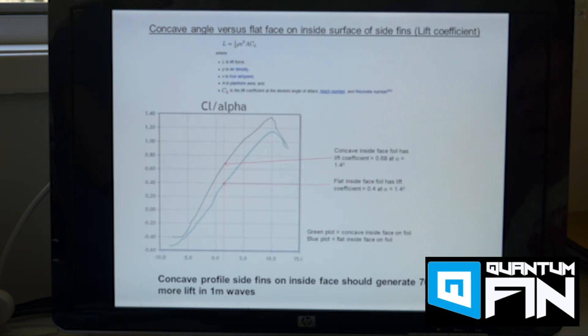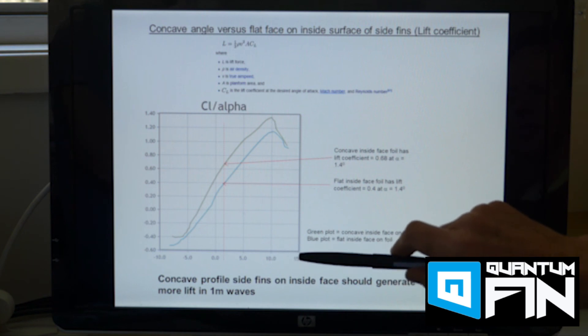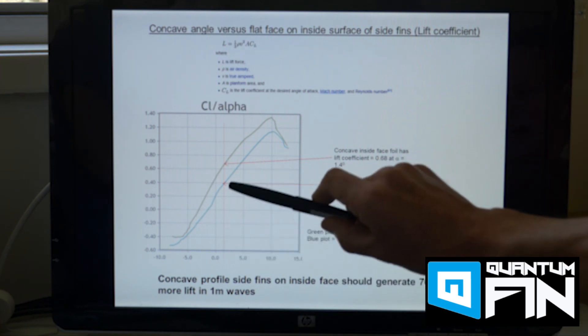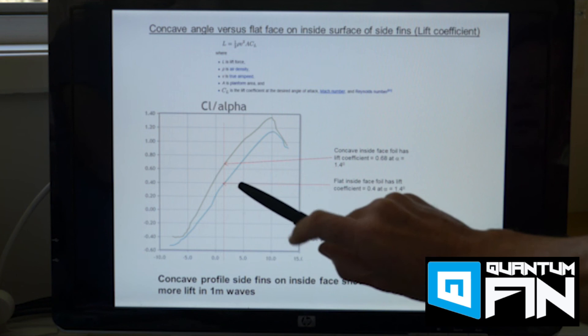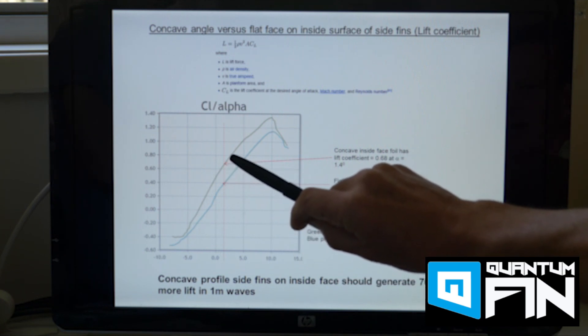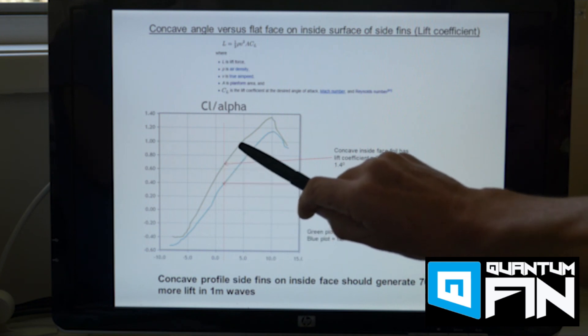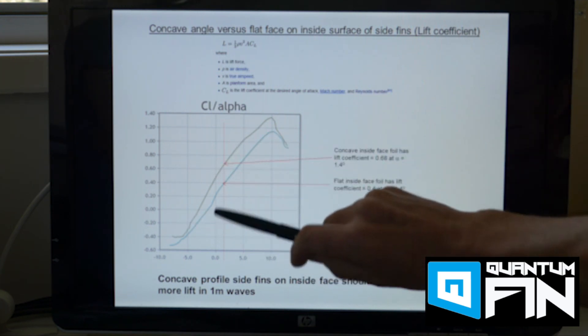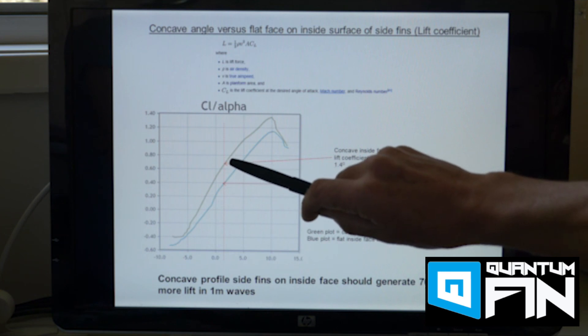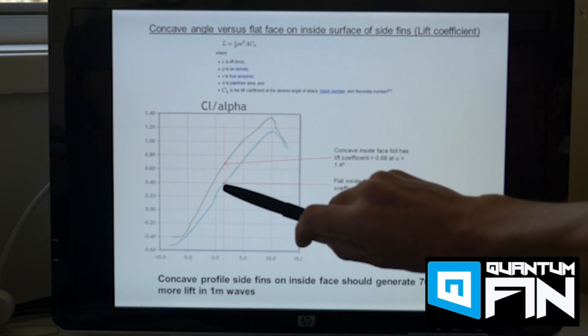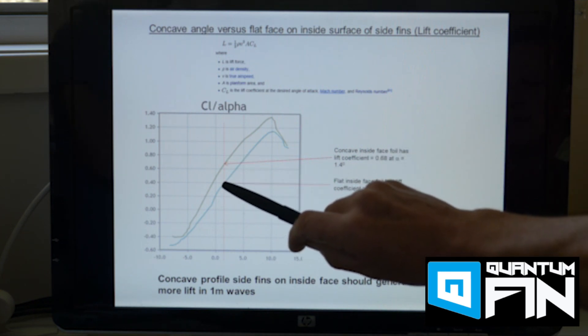So these foil sections are derived from known airfoil sections which have been used in the aeronautical industry for many years and what we're looking at when we compare these two different foil sections is that for a given angle of attack you can see here that the foil section with the concave inside base which is shown by the green line generates a significantly greater amount of lift than, this is the lift coefficient here on the vertical axis, it generates a significant amount more lift than a foil section which has a flat inside face which is shown by the blue plot here.